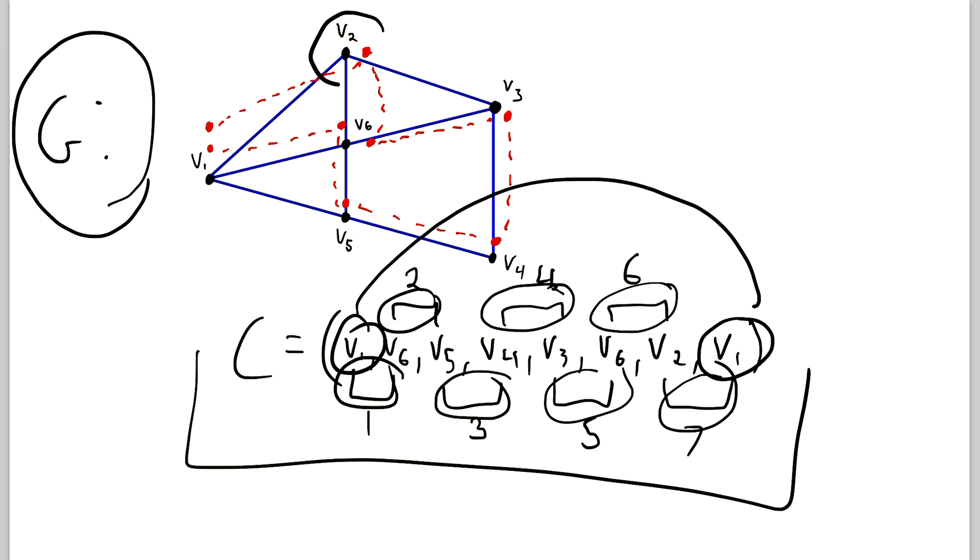So when we were up here at V2, we went back to V1, we could not have gone back down to V6, and then over to V1, and still had a circuit. Because then we would have traversed this edge, this one here, and this edge multiple times. So that's what a circuit is. It's a closed trail of length three or more.